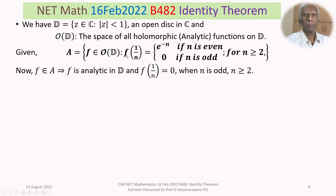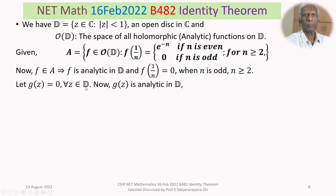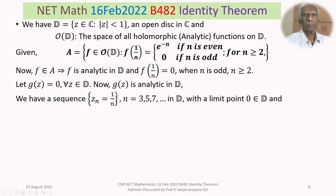Let us first consider the condition F of 1/n equals 0 when n is odd, for n greater than or equal to 2. Let G of Z equal 0 for all Z belonging to D — that is, G vanishes at every point of D. Then G of Z is clearly analytic in D. We have the sequence Z_n equals 1/n for n equal to 3, 5, 7, and so on — the odd values — which lies in D and has limit point 0, and 0 belongs to D.